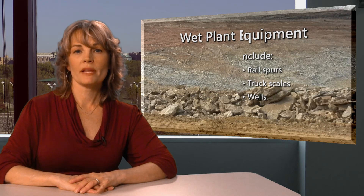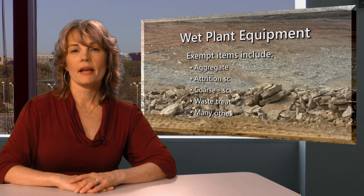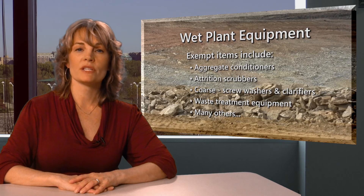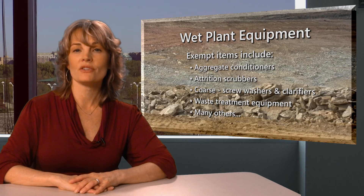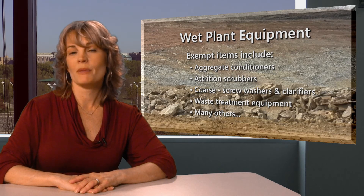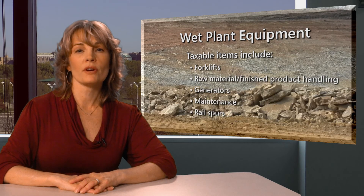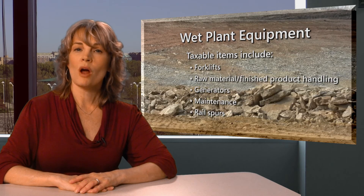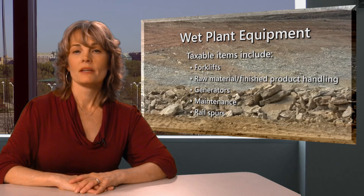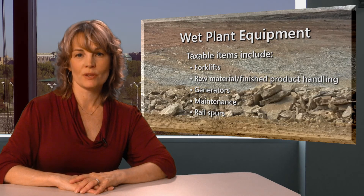For wet plant equipment, exempt items include aggregate conditioners, attrition scrubbers, coarse material screw washers, clarifiers, waste treatment equipment, and many others. Taxable items include forklifts, raw material and finished product handling equipment, generators, maintenance equipment, and rail spurs.